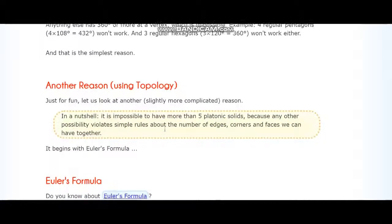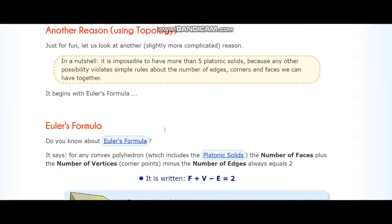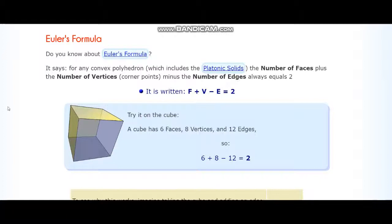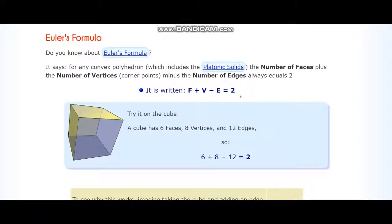In order to prove this, you need a couple of facts. The first is Euler's formula. Euler's formula states that for any connected graph — a graph that's essentially all together — the formula F plus V minus E equals two holds true. F is the number of faces, V is the vertices, and E is the number of edges.